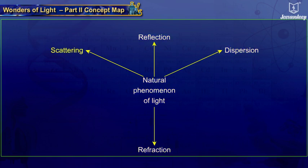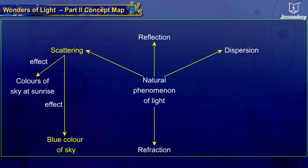Scattering of light makes the sky appear blue and imparts reddish or orange color to the sky at sunrise or sunset. Dispersion of light results in the production of a spectrum.